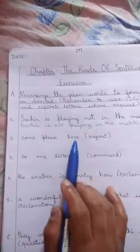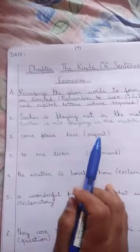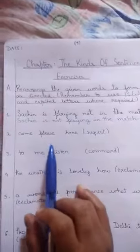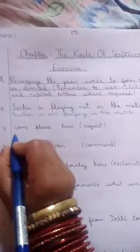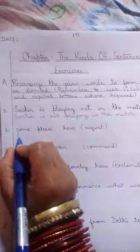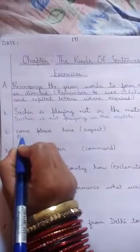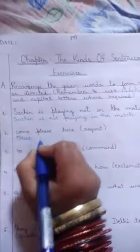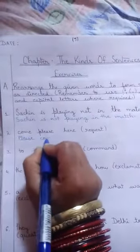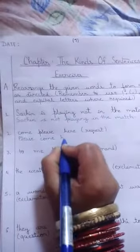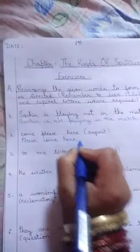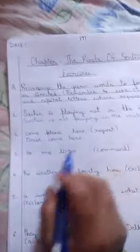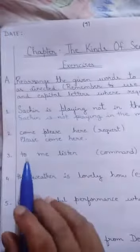Now, can you rearrange this group of words? Come, please, here. It's a request. How will you do it? A request always starts with please — so the answer is: Please come here. You will place a full stop at the end.